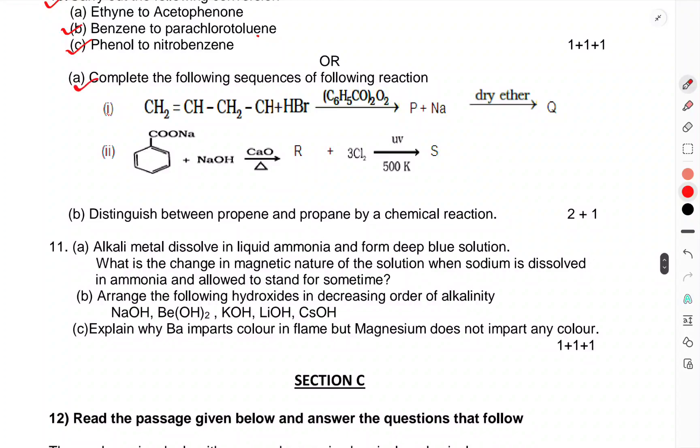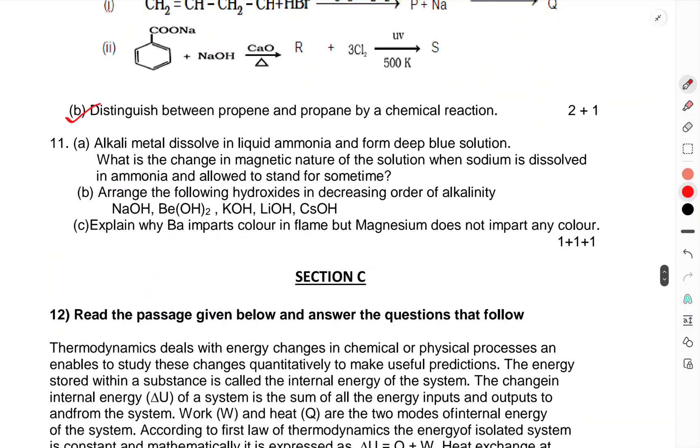OR: Complete the following sequence of reactions. Question B: Distinguish between propyne and propene by chemical reaction. Question 11: An alkali metal dissolved in liquid ammonia forms a deep blue solution. Discuss the change in magnetic nature of the solution when sodium is dissolved in ammonium followed by standing for some time. Arrange the following hydroxides in increasing order of alkalinity: NaOH, Ba(OH)2, KOH, LiOH, CsOH. Explain that Ba imparts colored flame, but magnesium does not impart any color.